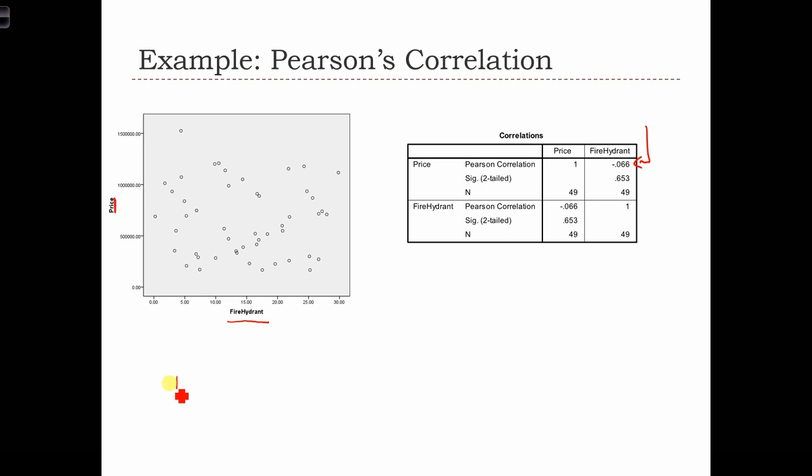So if we wanted to compute the T, we would have N minus 2 over 1 minus R squared, which equals minus 0.066 root 47 over 1 minus 0.066 squared. That's a negative in there. And that equals 0.46.